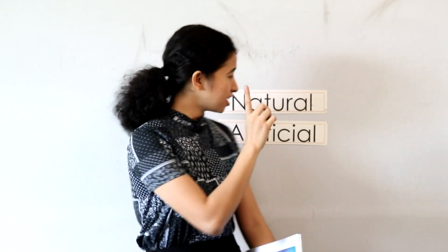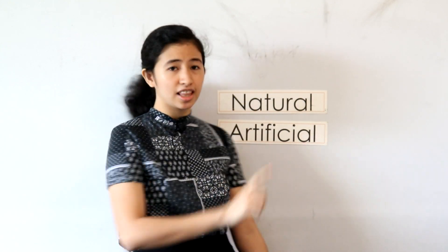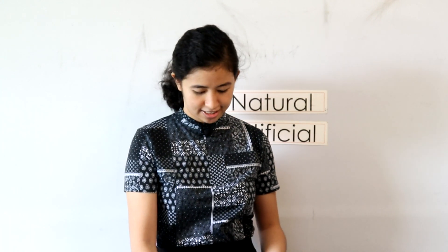And now, what is an artificial light? Artificial lights are lights that are produced or made by man. So, what are the examples of artificial light?